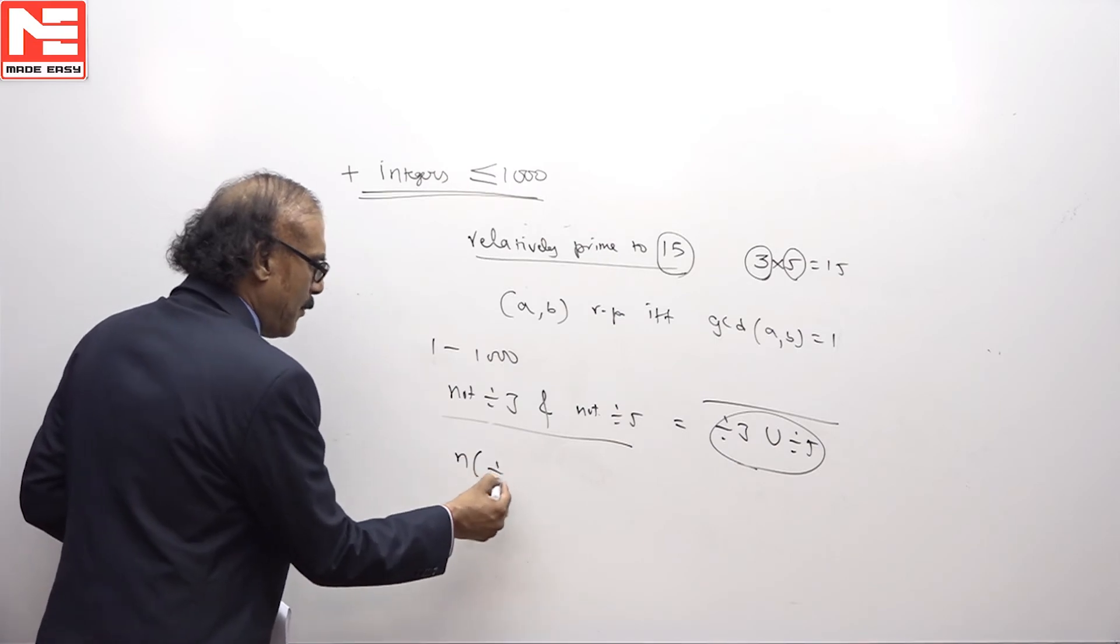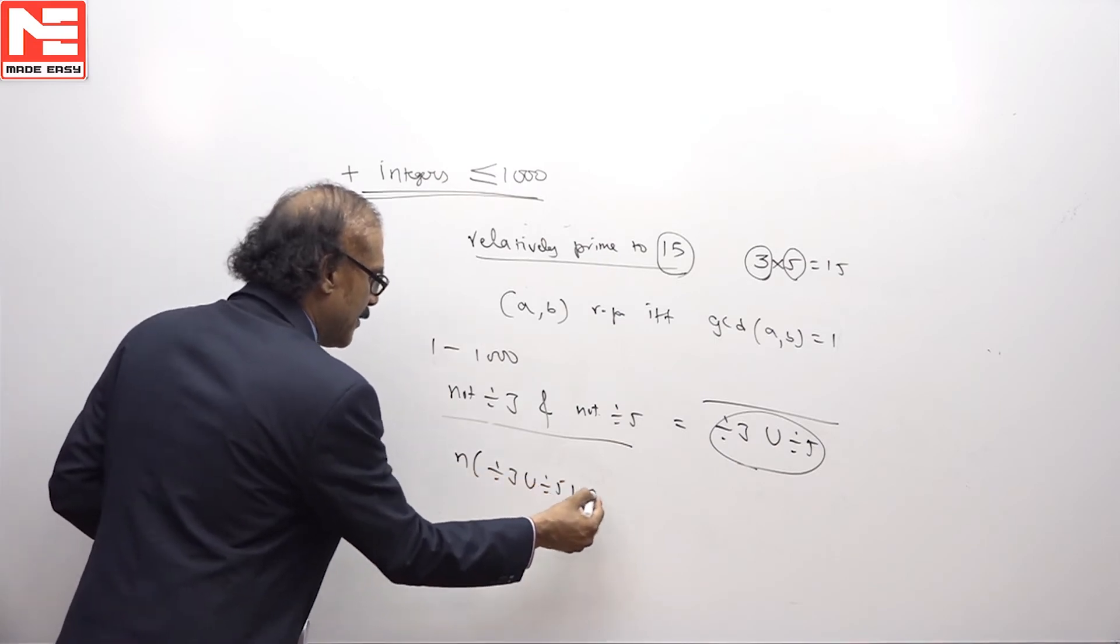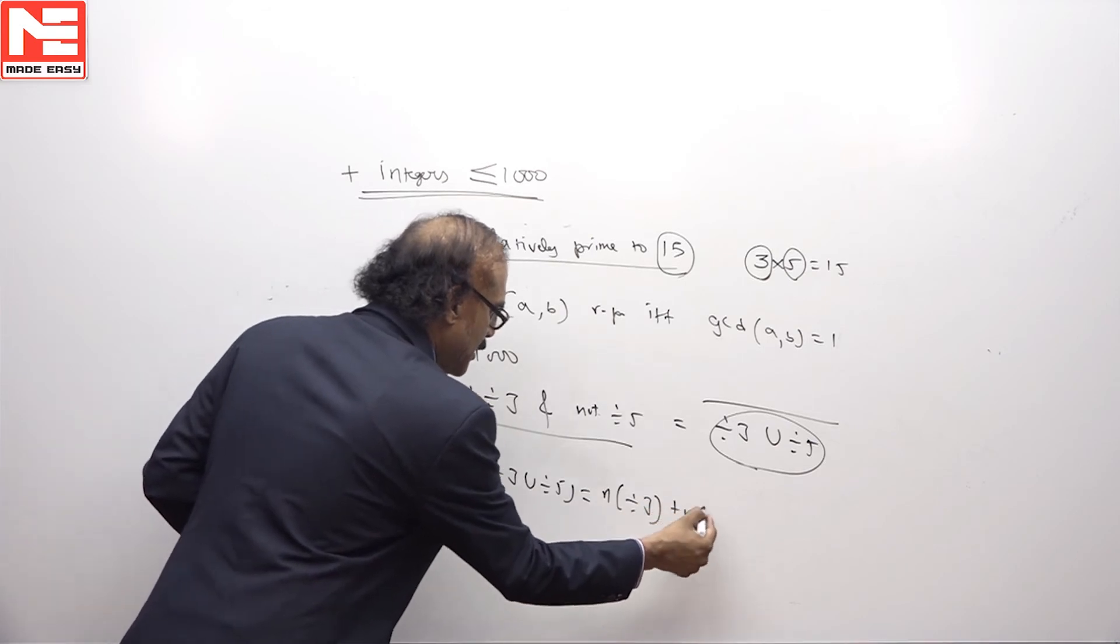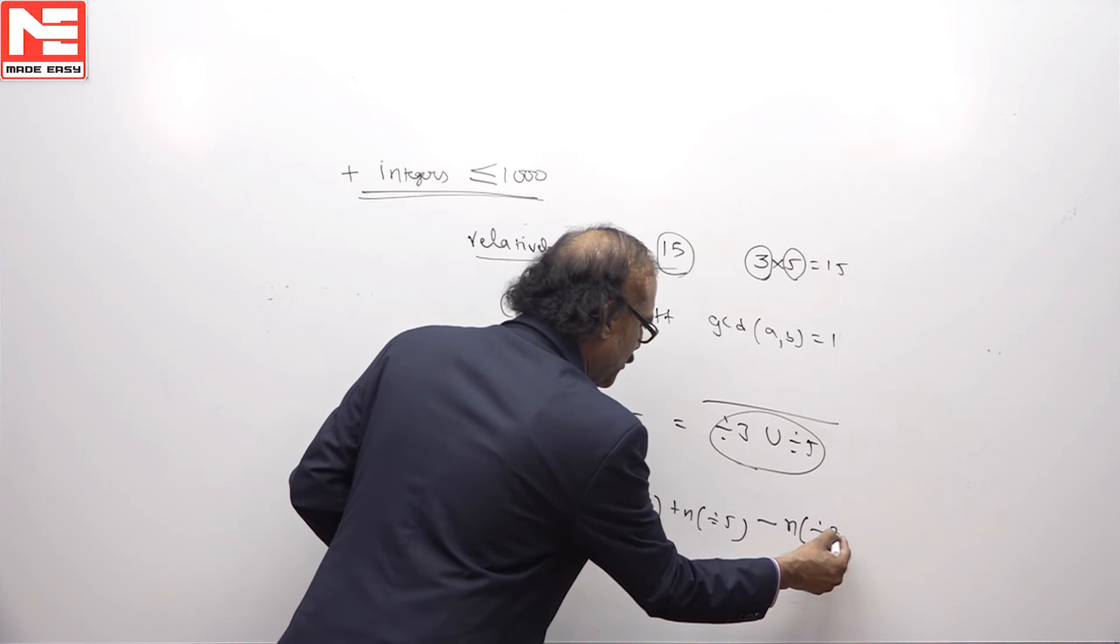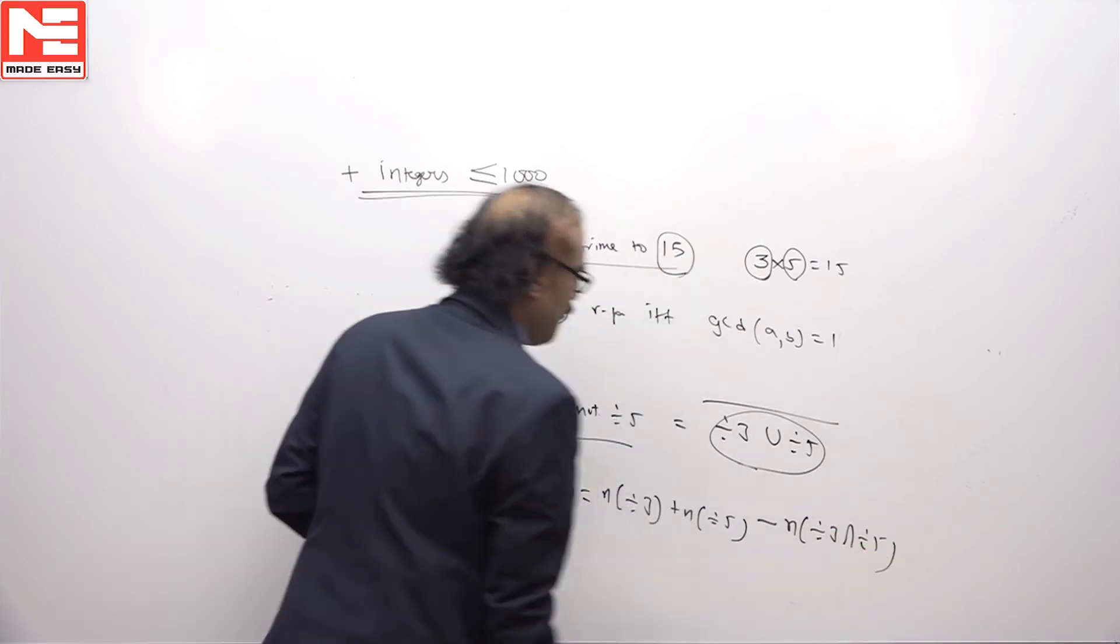The number of numbers divisible by 3 or divisible by 5 is number of numbers divisible by 3 plus number of numbers divisible by 5 minus number of divisible by 3 as well as 5.